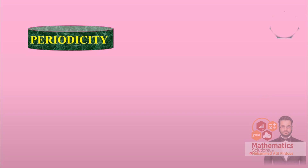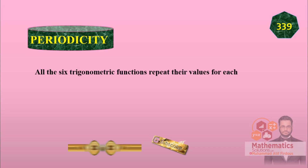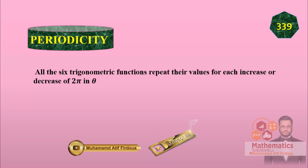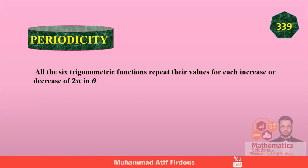I am telling the definition of periodicity on page number 339. The definition says: all six trigonometric functions repeat their values for each increase or decrease of two pi in theta. This means if you have angle 45 and you add 360 degrees, the angle makes no difference — after one revolution the angle remains the same.